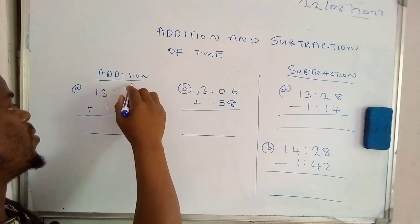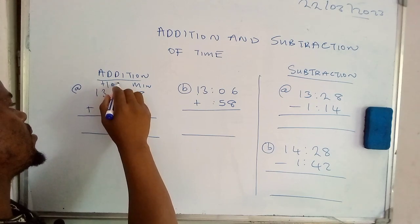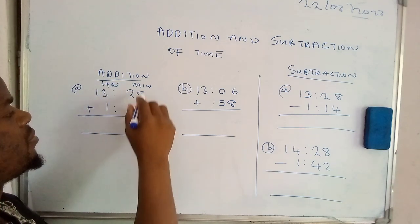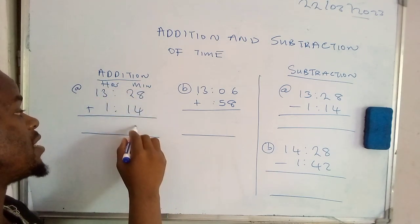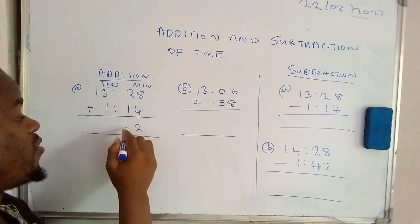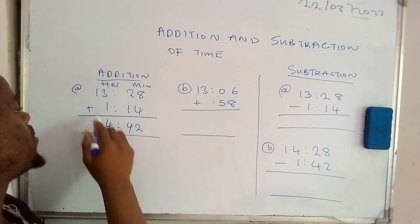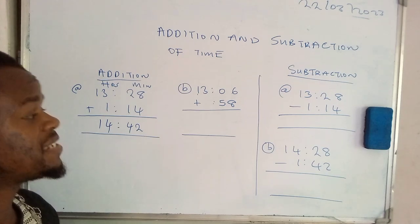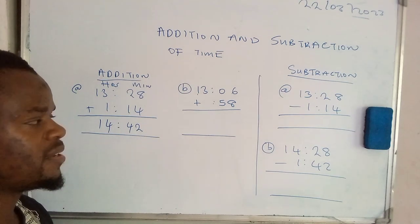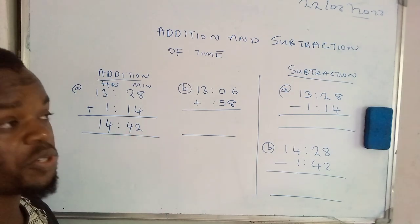You need to know that these are minutes and these are hours. So now we'll add 8 plus 4, that's 12. Then 2 plus 1, that's 3, plus that 1 from here, that's 4. 3 plus 1, that's 4, and then 1. This time exists, so there's nothing to change here. That is 14:42.